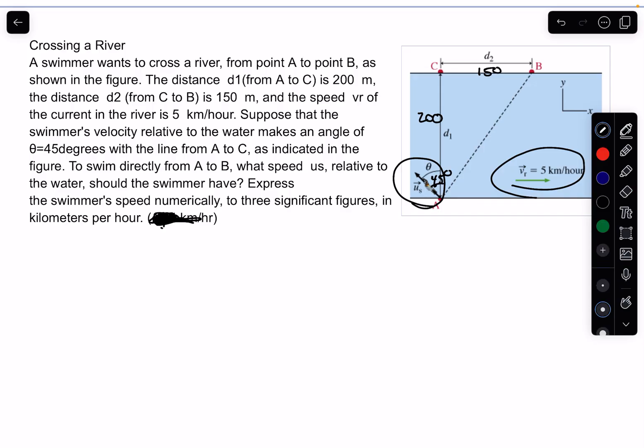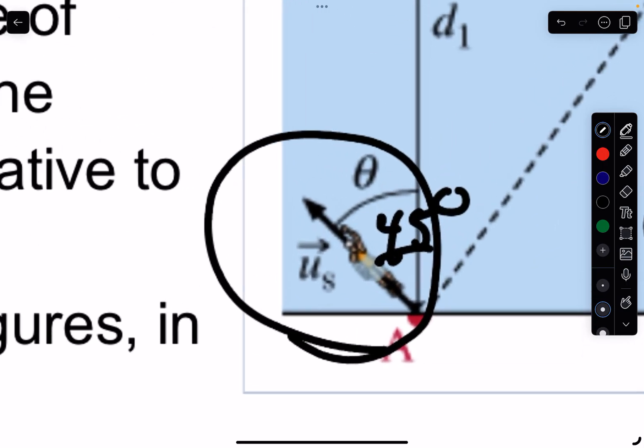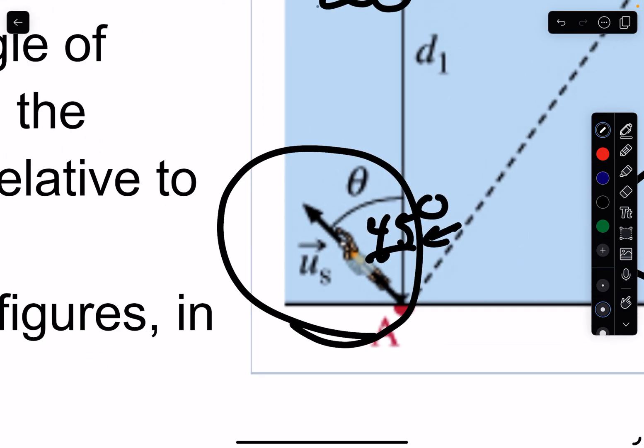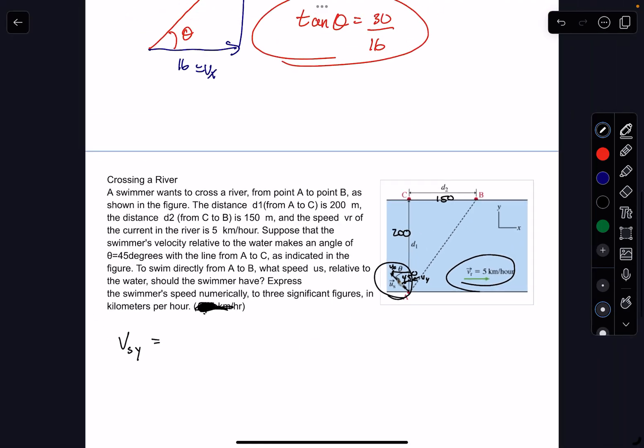The V of the swimmer in the Y direction, if we zoom in here, this is VY, and then VX is this number here. So we've got VY and VX.